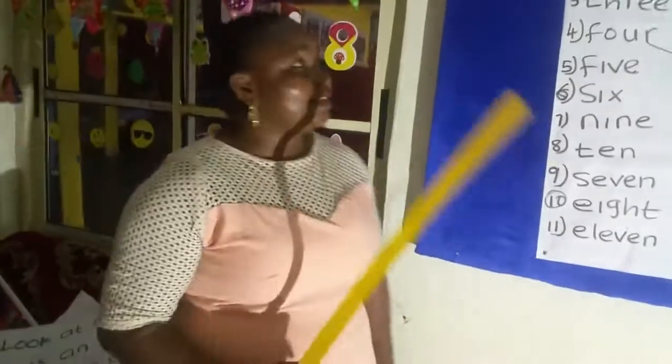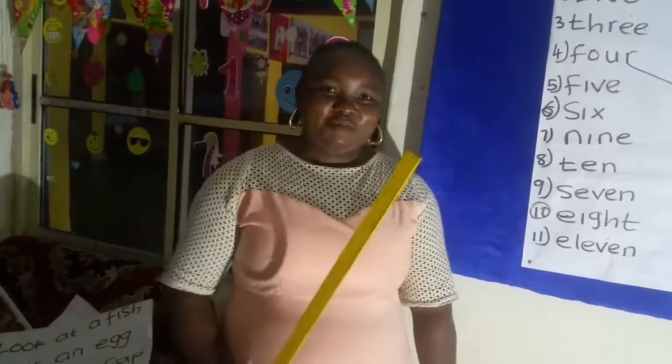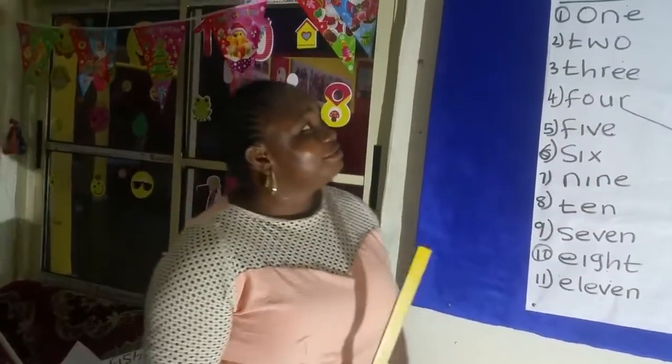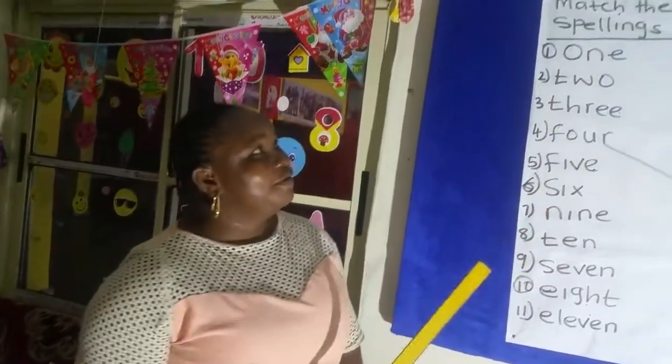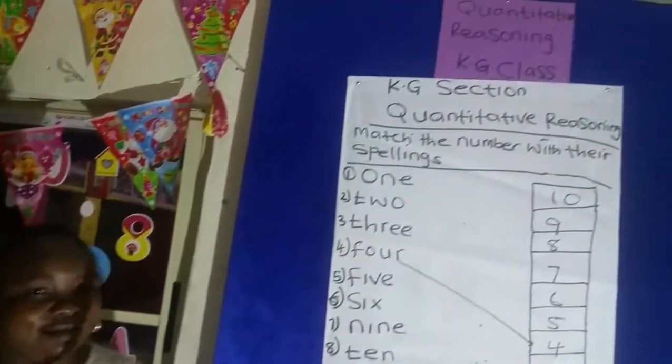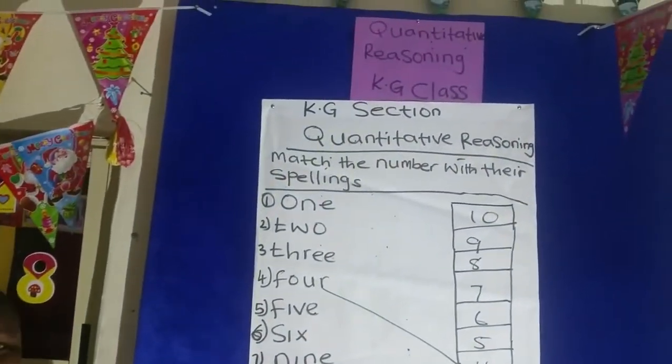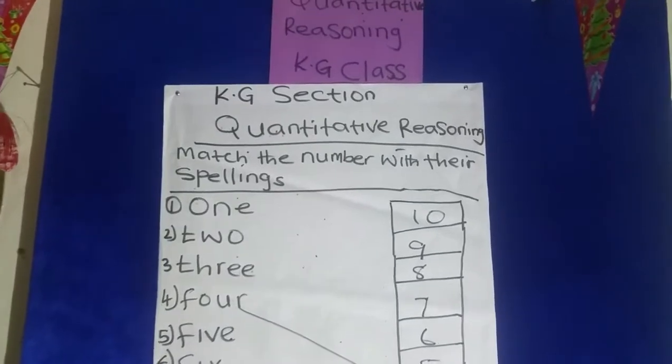Good afternoon my children at home. I am back again. This is quantitative for KG classes. You know we have KG1, KG2 and KG3.